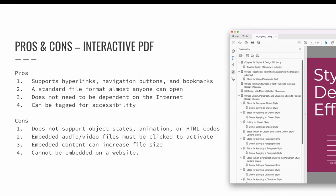The pros and cons I have compiled for interactive PDFs are listed on screen. My pros are that interactive PDFs support hyperlinks, navigation buttons, and bookmarks. They are a standard file format, meaning almost anyone can open them. They do not need to be internet dependent. And they can be tagged for accessibility. My cons are that interactive PDFs do not support multi-state objects triggered by buttons, animation, or embedded HTML codes. Embedded audio and video files will not play automatically — you must click to activate them. Embedding content increases the file size compared to other digital formats. And you cannot embed an interactive PDF on a website; you must download the file and open it on your computer.